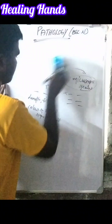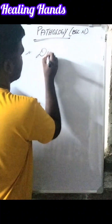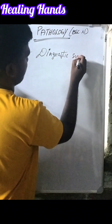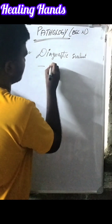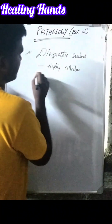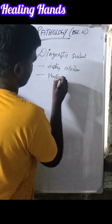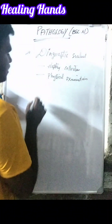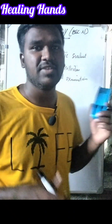In the next heading we should write diagnostic evaluation. Under diagnostic evaluation, we write first the history collection, then the physical examination, followed by other diagnostic evaluations — meaning how we diagnose the particular disease condition.